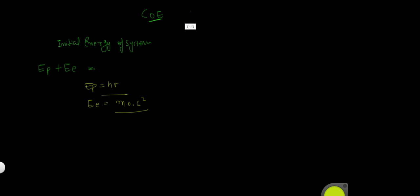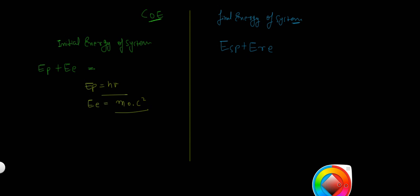Now, I am going to write the final energy of the system. The final energy of system can be written as energy of scattered photon plus energy of recoiled electron. Now, the energy of scattered photon is equal to h nu dash.